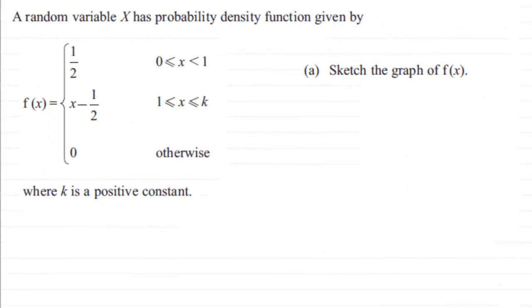Hi, now what we've got here is a question where we've got to sketch a probability density function. We've got f(x) defined as being 1/2 when x is greater than or equal to 0 but less than 1, equal to x minus 1/2 when x is greater than or equal to 1 but less than or equal to k, and 0 otherwise, where k is a positive constant.